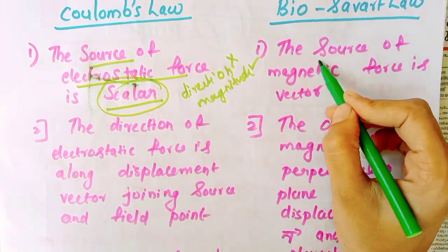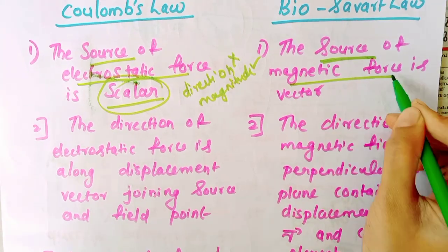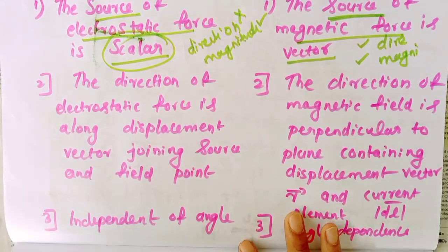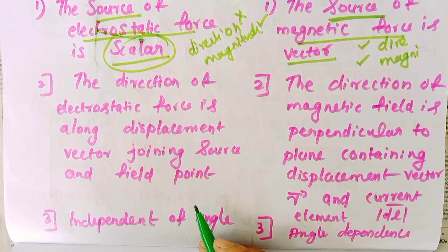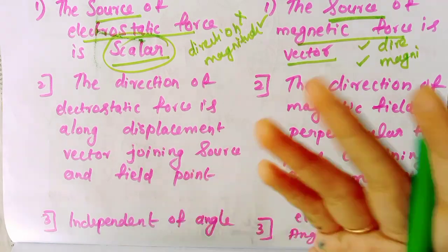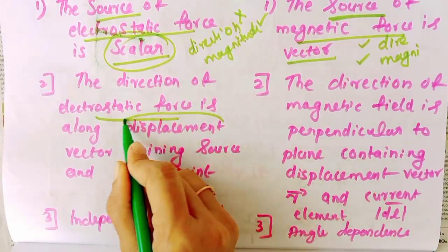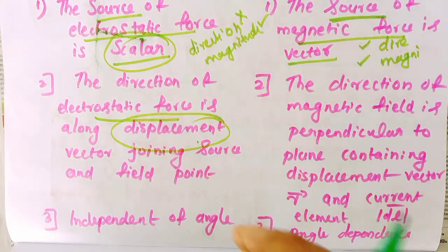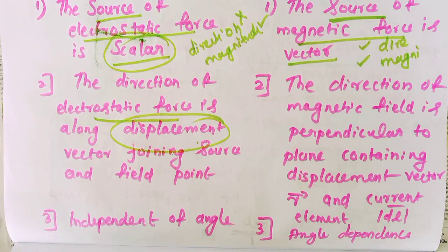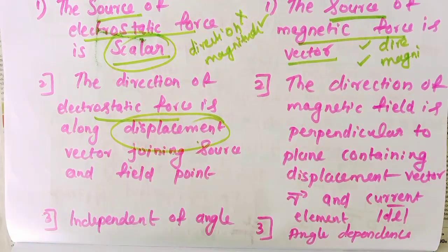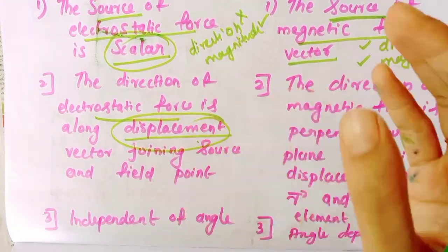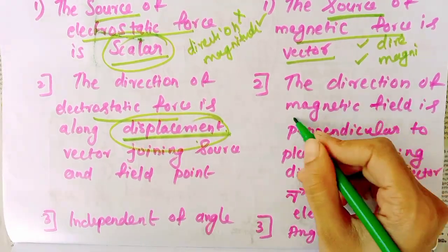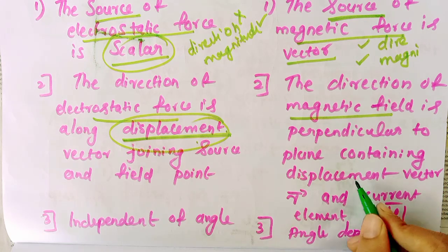In the case of Biot-Savart Law, the source is a current element and the force is magnetic, so it is a vector. Vector means it has both direction and magnitude. The direction of electrostatic force is along the displacement vector joining the source and field point. The direction of magnetic field is perpendicular to the plane containing the displacement vector and the current element.